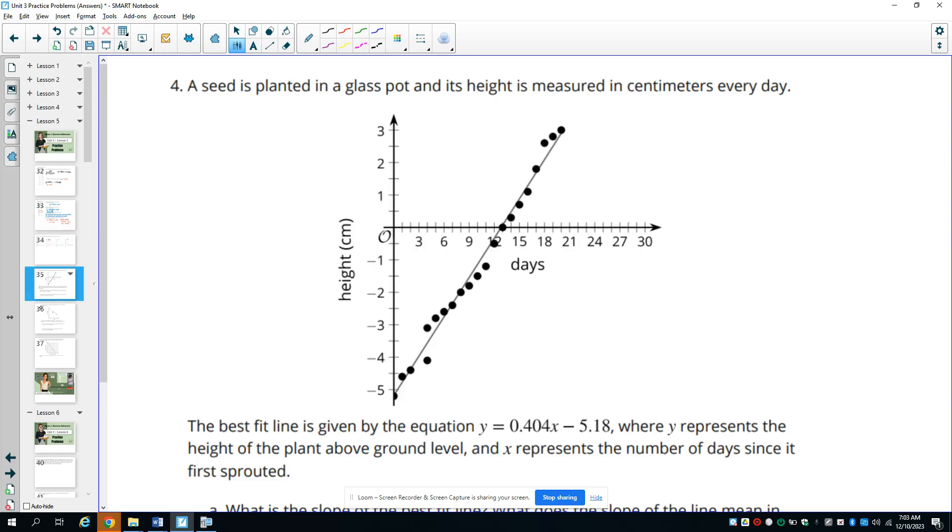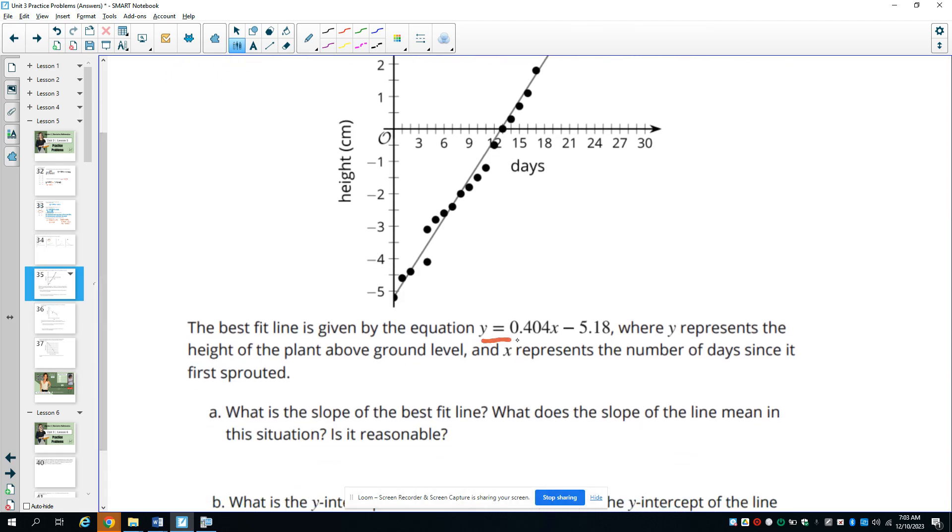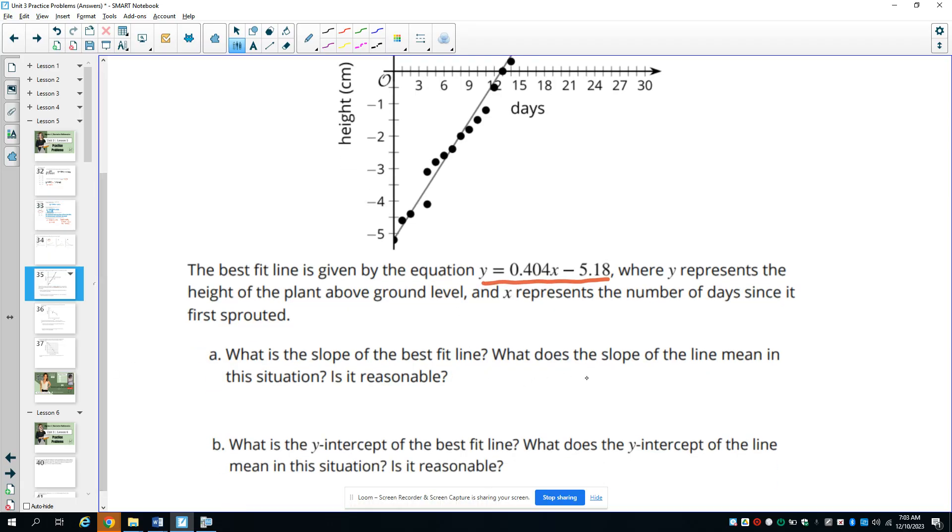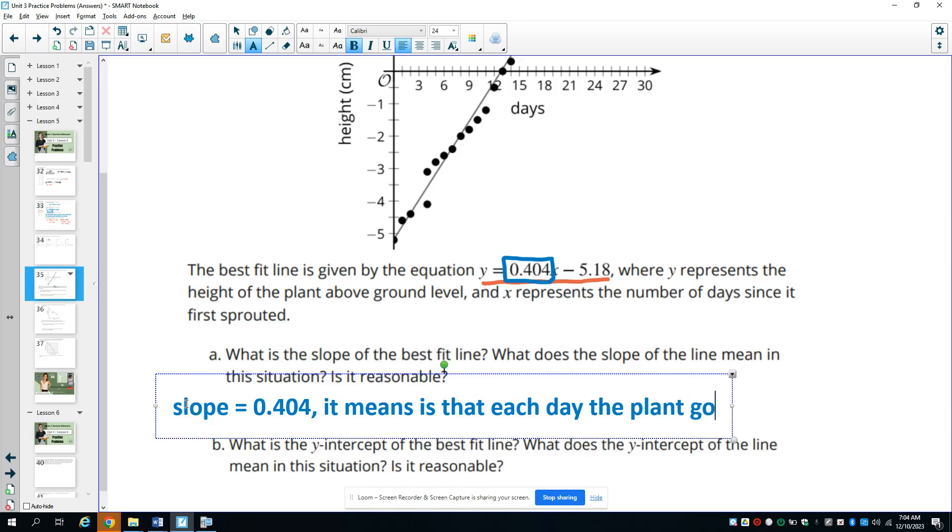Number four, a seed is planted in a glass pot and its height is measured in centimeters every day. The best fit line is given by this equation where y is the height of the plant above ground level and x is the number of days since it first sprouted. What is the slope of the line of best fit and what does it mean in this situation? So we know that the slope is the number that is in front of or attached to the x variable because it's the part that's changing. And so we see that the slope is 0.404 and what this means is that each day the plant grows by 0.404 centimeters.